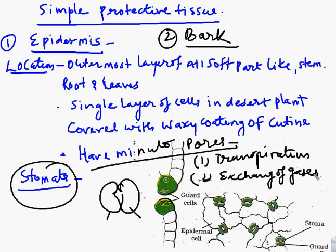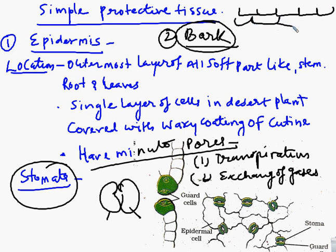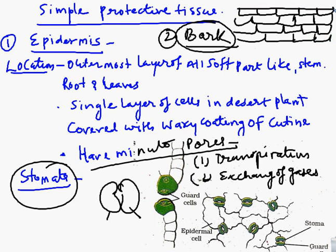In old stems and plants, the outer covering of the stem is called bark. The cells of bark are compactly packed with no intercellular space. These cells are dead and are covered by a chemical called suberin, which is impermeable to gases and water. So these are the simple protective tissues — epidermis and bark.